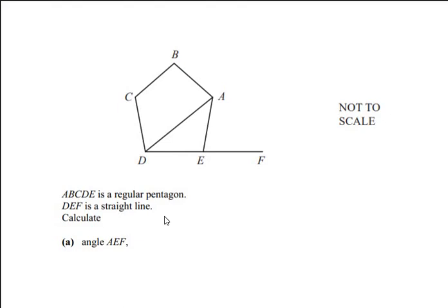Welcome or welcome back to my channel. In this video we are going to solve an example on geometry - polygons. ABCDE is a regular pentagon, so a pentagon is a polygon with five sides. DEF is a straight line. We have to find out the angle AEF.